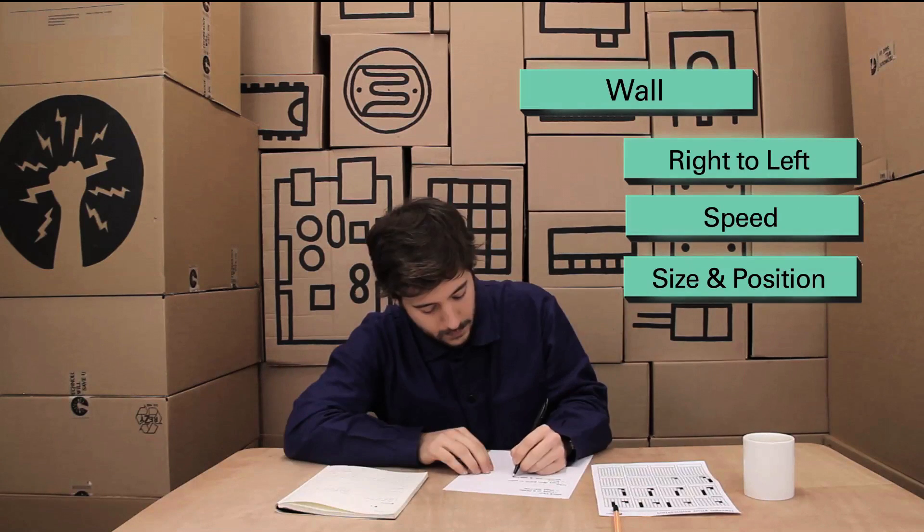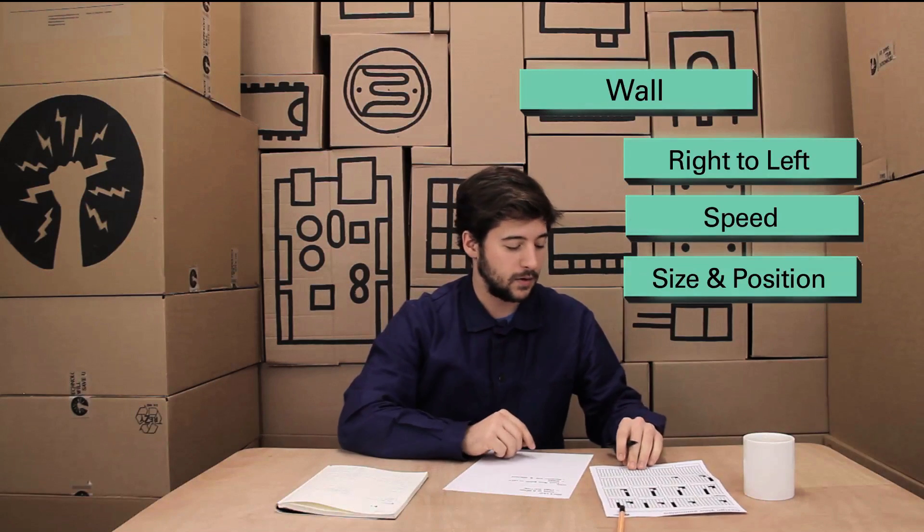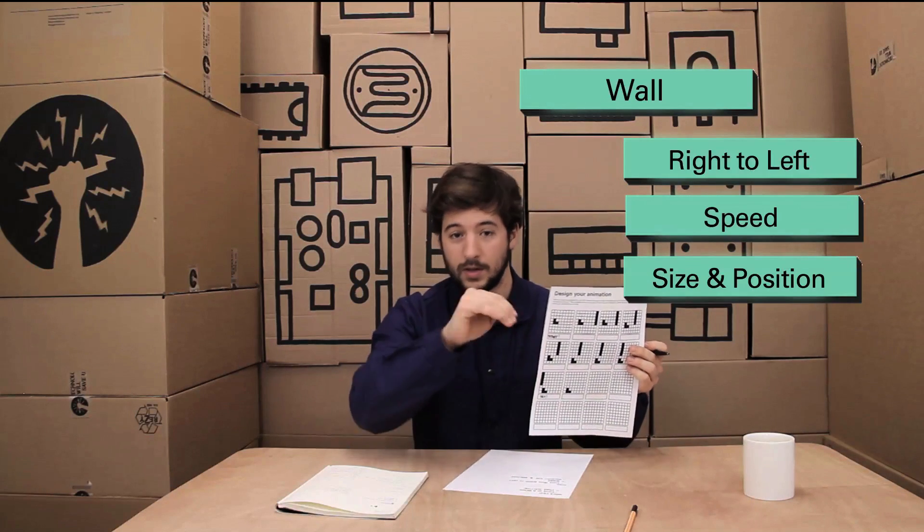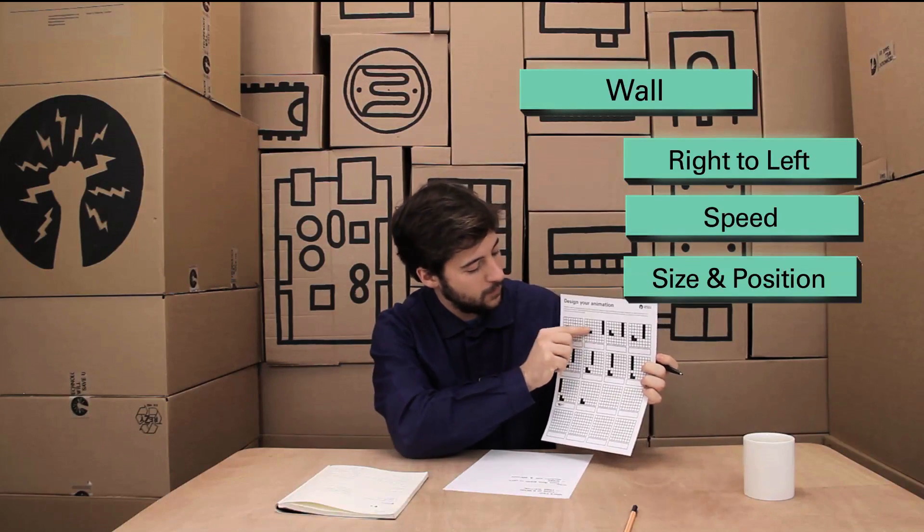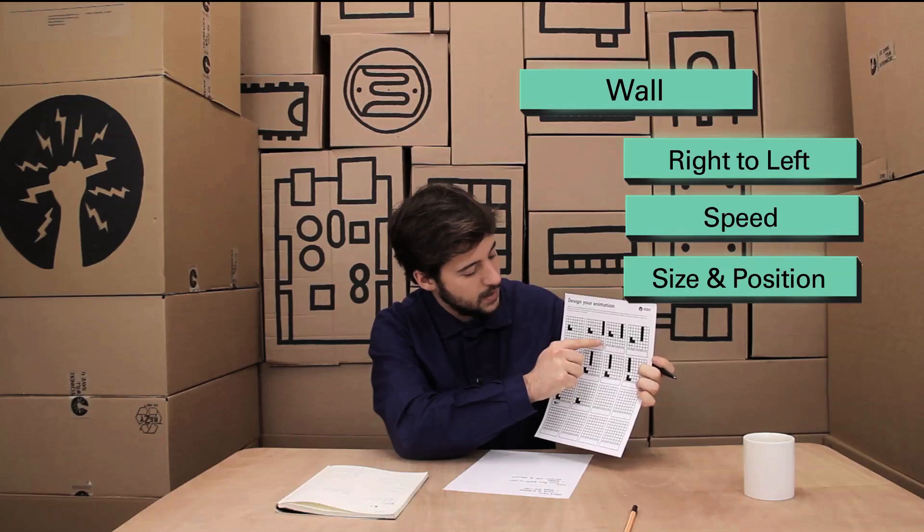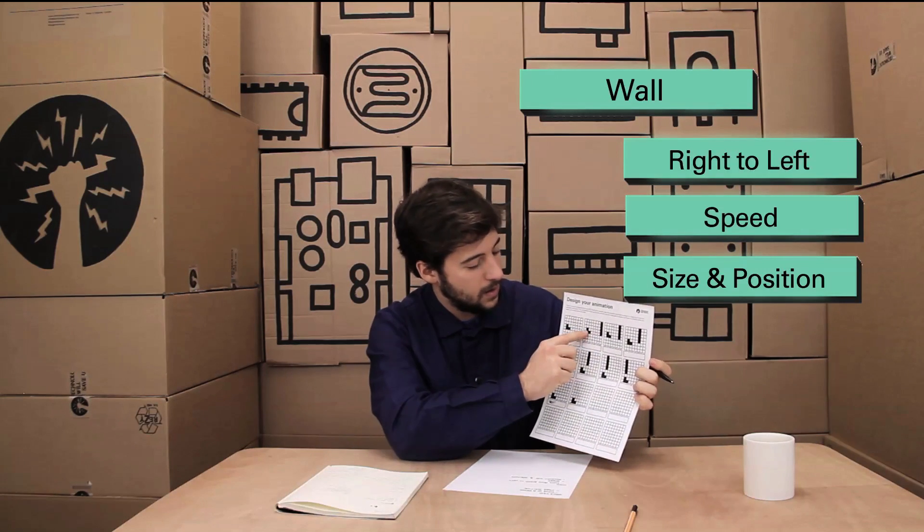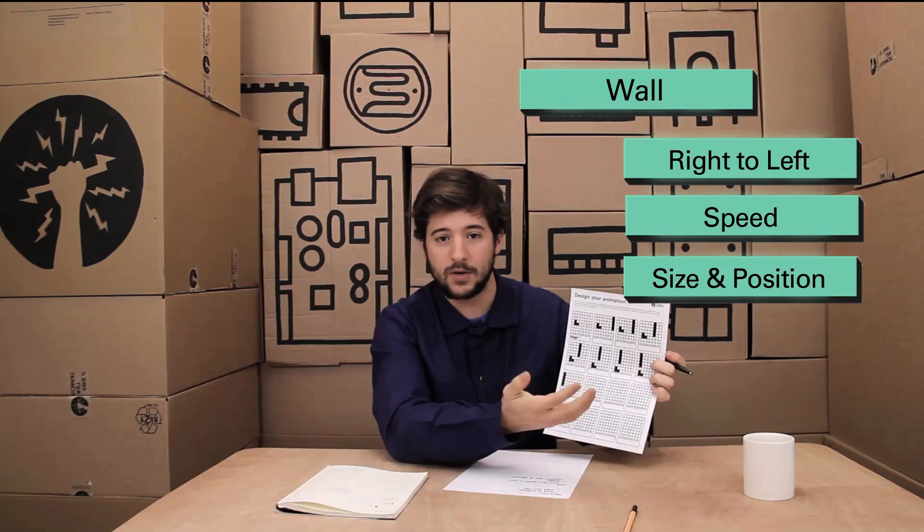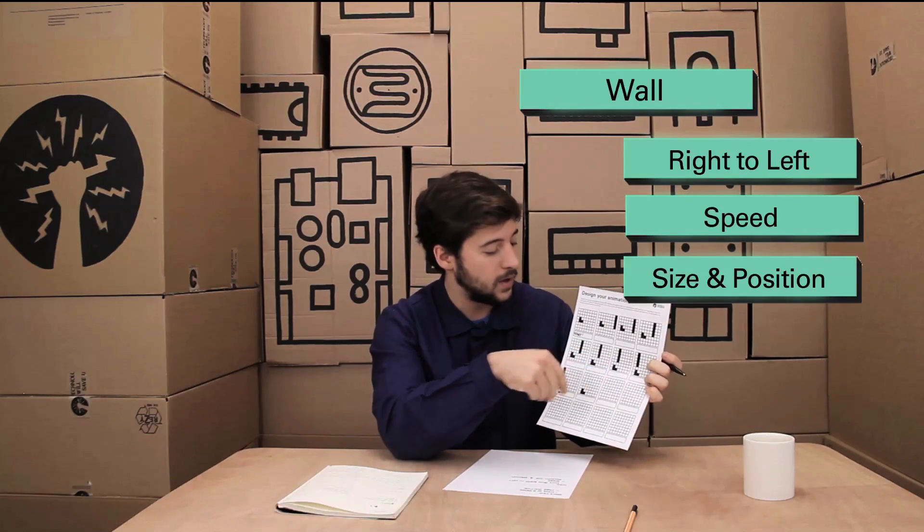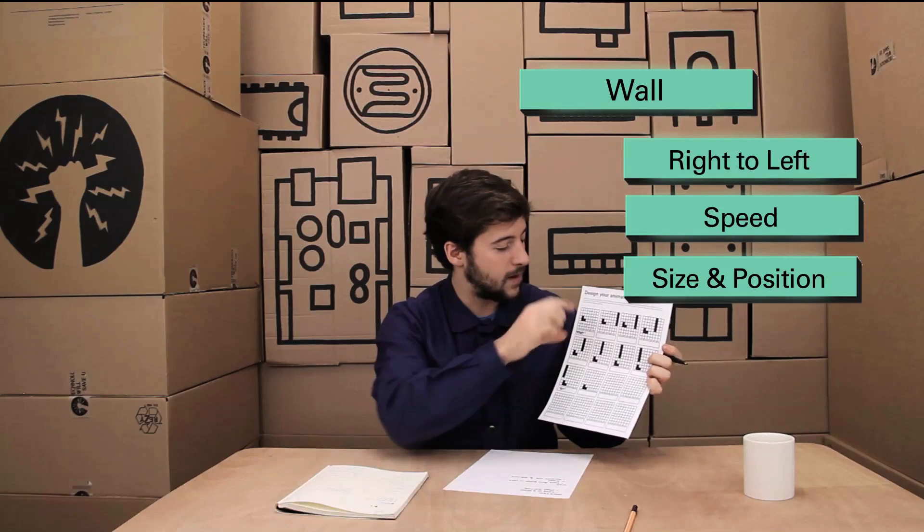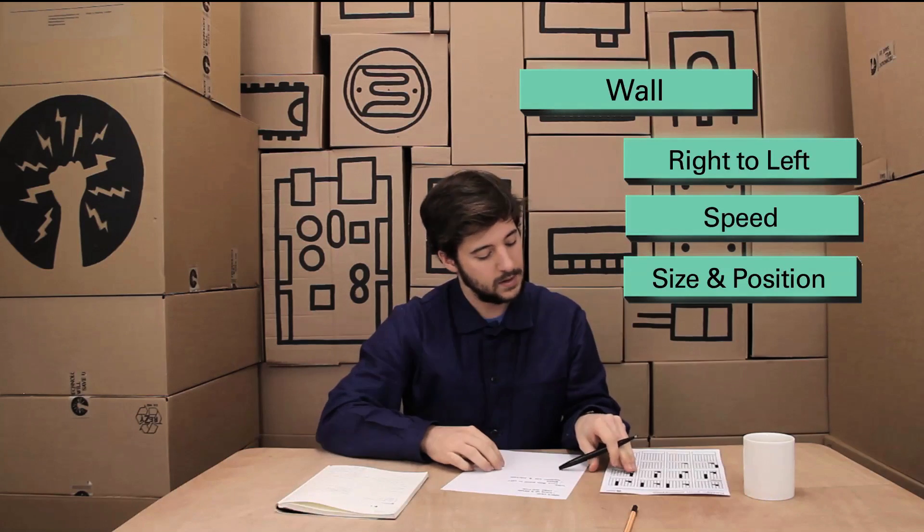And then finally we want to be able to randomize their size and their position. One more thing that we might want to do is we want to make sure that it's always possible to get through a wall. For example, if you have a wall that is seven pixels high and our spaceship is two pixels high, we won't actually be able to pass through. So we need to make sure that the maximum height of every wall is, let's say, six pixels.